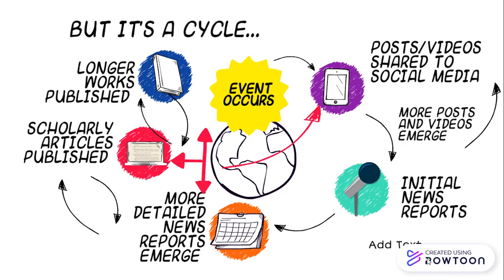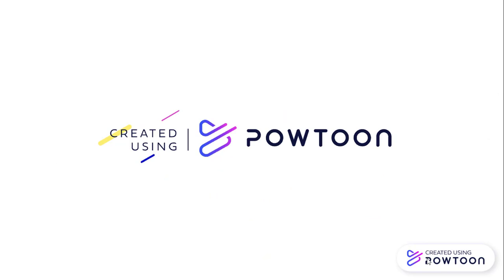The thing to remember is that the information cycle is a cycle. While immediately after an event occurs you're going to have posts shared to social media and initial news reports, and then more detailed reports emerge, you're also going to have posts shared back on social media about those initial news reports. So information is always being created, recreated, and exchanged. But where something falls on the information cycle can tell you a lot about what that information is intended to do and how you can use it. If you have any questions about the information cycle or about how to use information in general, let us know — the library is here to help.